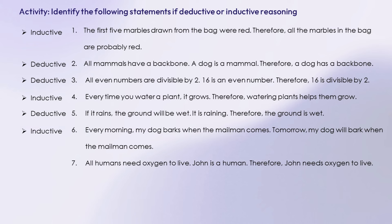Number 7: all humans need oxygen to live. John is a human. Therefore, John needs oxygen to live. Answer: deductive reasoning.